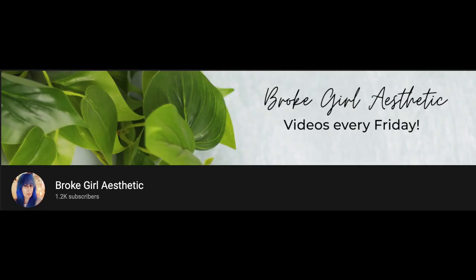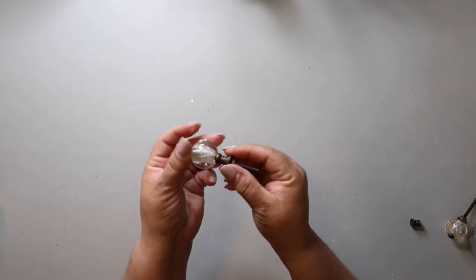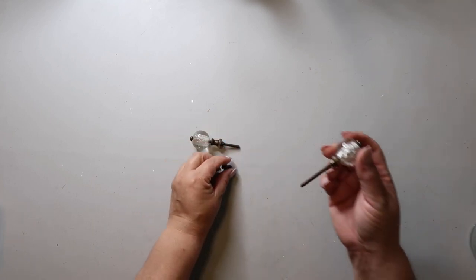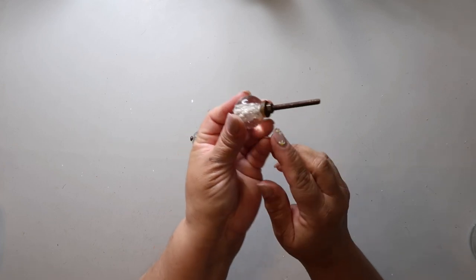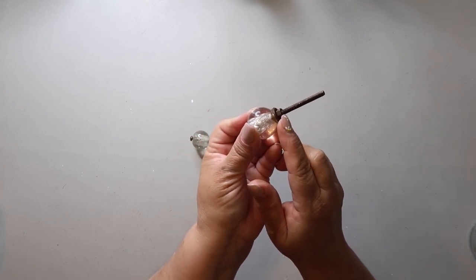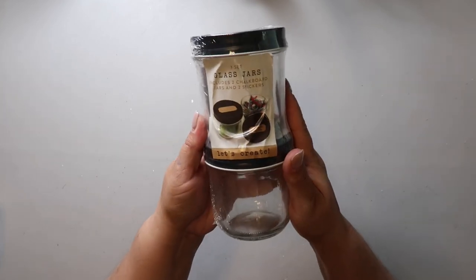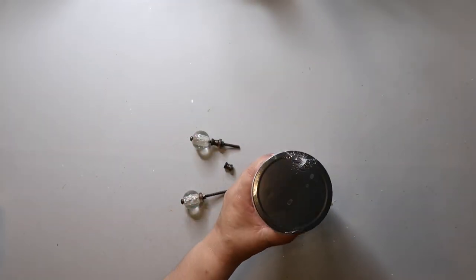Before we get started with my DIYs, I wanted to thank Tiffany from Broke Girl Aesthetic for allowing me to join her playlist. I'll have a link to her channel and the playlist below. I have these knobs from Hobby Lobby and I'm going to cut them down the stem. I'm not actually sure what you call that part, but anyway I'm going to cut that down and you have to use a certain kind of saw to do that, but luckily we have one.